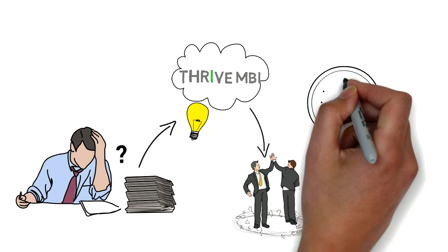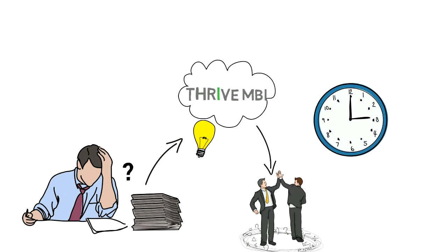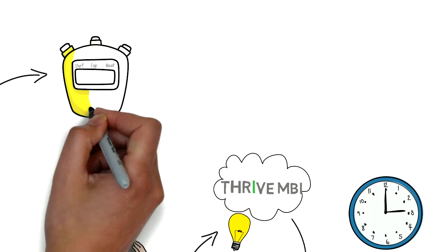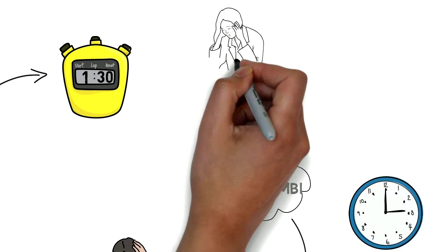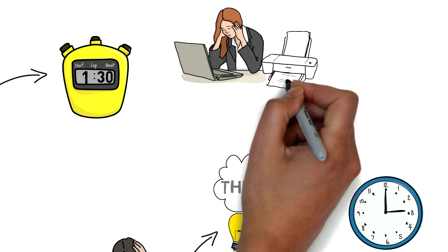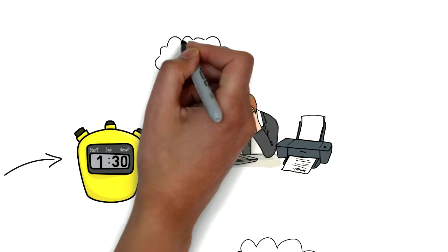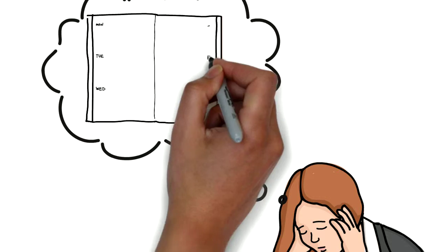Thrive MBI installs in minutes and is completely hassle-free. The average practice spends 90 minutes per week inputting, filtering, printing, or searching for data to understand practice performance, not including all the time searching for opportunities to fill the schedule.